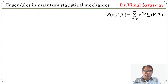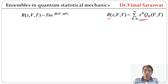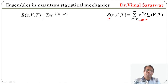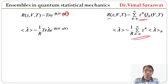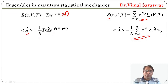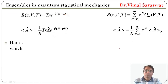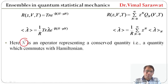The grand partition function r equals trace of e^(minus beta(H minus mu N)), where mu is the chemical potential and N is the particle number operator. The ensemble average of A equals 1 over r times the trace of operator A times e^(minus beta(H minus mu N)). Here N is an operator representing a conserved quantity that commutes with the Hamiltonian.